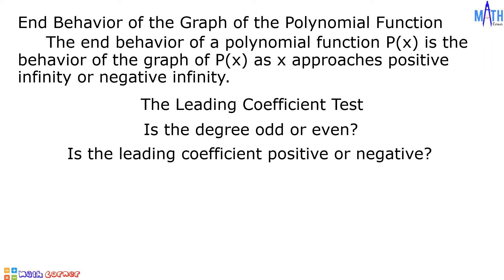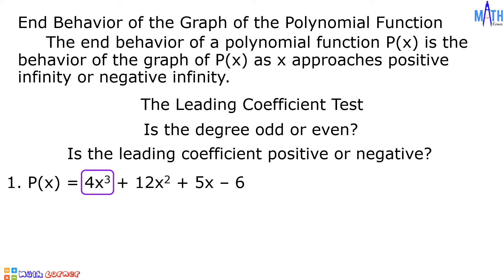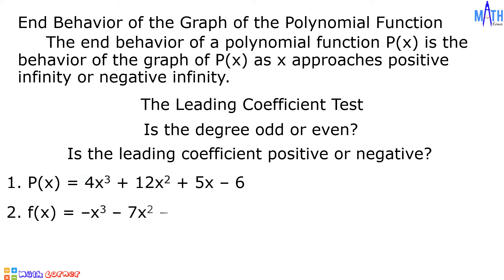Let us have some examples. Example number one: p of x equals 4x cubed plus 12x squared plus 5x minus 6. The leading term is 4x cubed. It is a polynomial of odd degree. The leading coefficient is positive. Example number two: f of x equals negative x cubed minus 7x squared minus 14x minus 8. The leading term is negative x cubed. It is a polynomial of odd degree. The leading coefficient is negative.